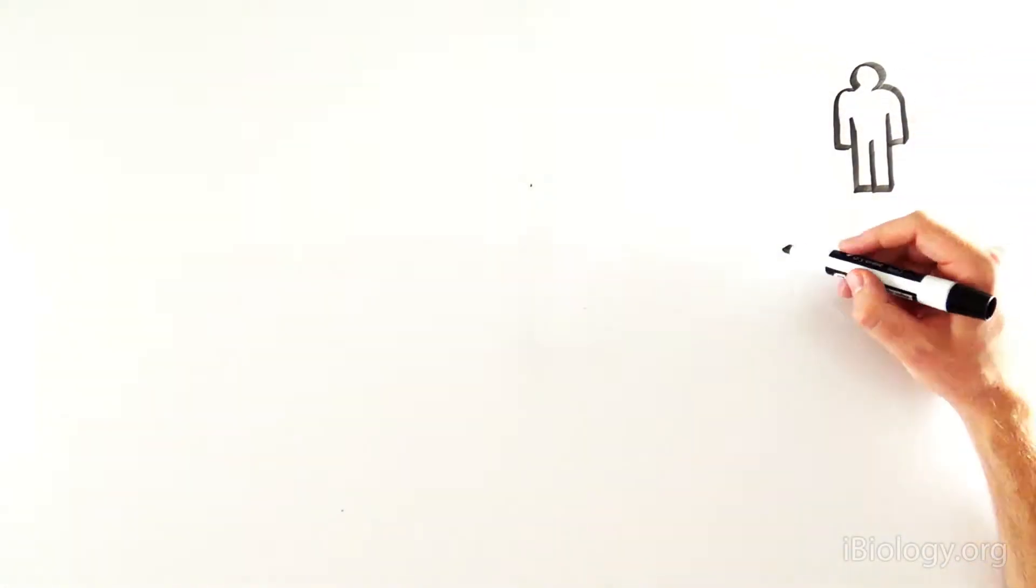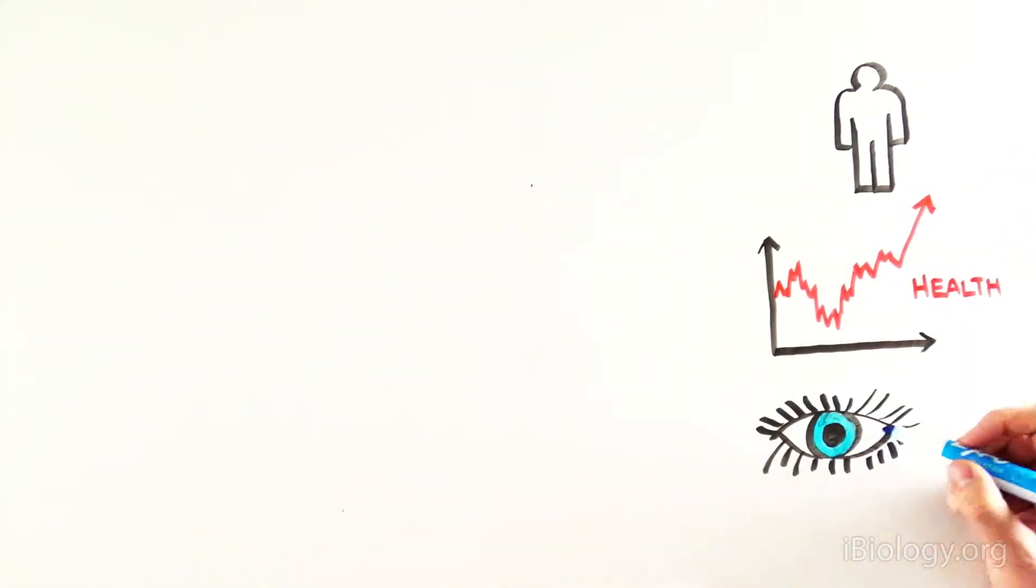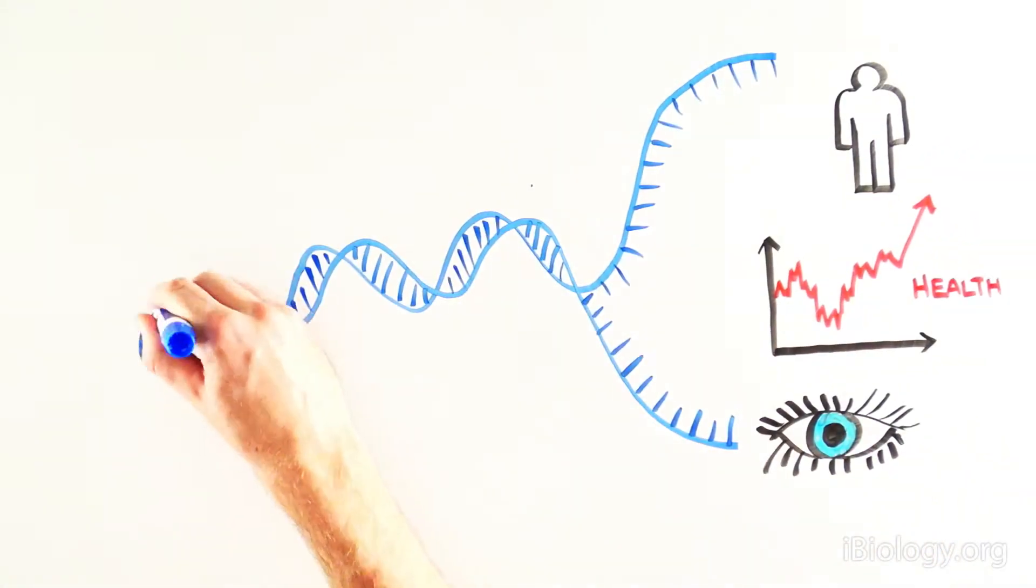All of the information needed to direct our development from single cells, our disease susceptibility, the color of our eyes and our skin is included in our DNA.